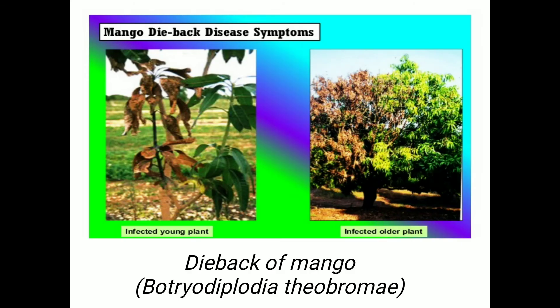The first disease of mango is dieback disease, which is caused by the causal organism Lasiodiplodia theobromae. The name 'dieback' indicates that death of the plant takes place from the back side, that is from the branches. The disease is characterized by the drying of branches and twigs from the tip downwards.